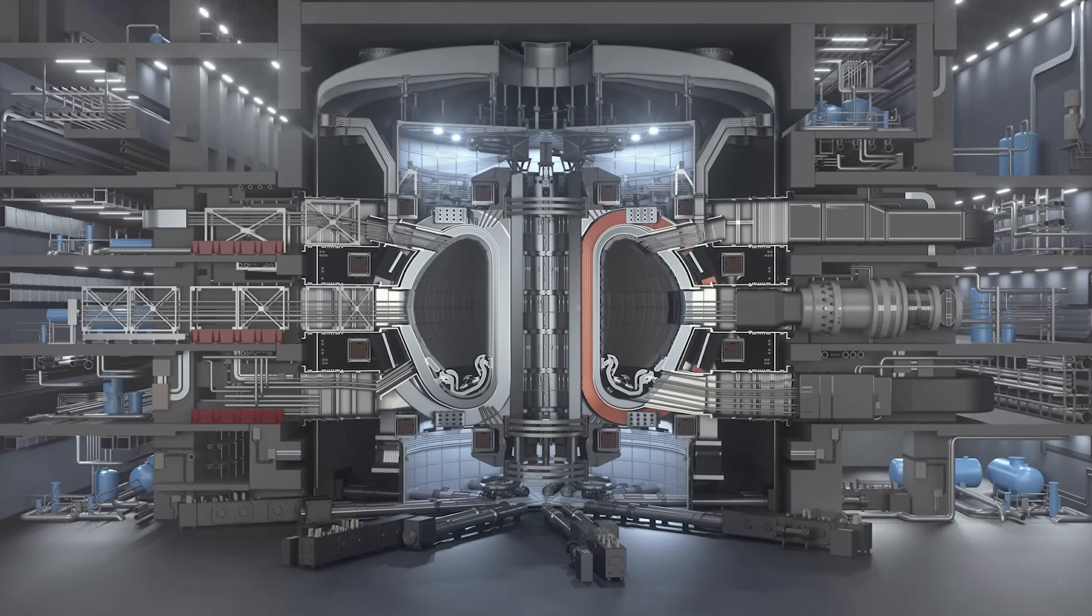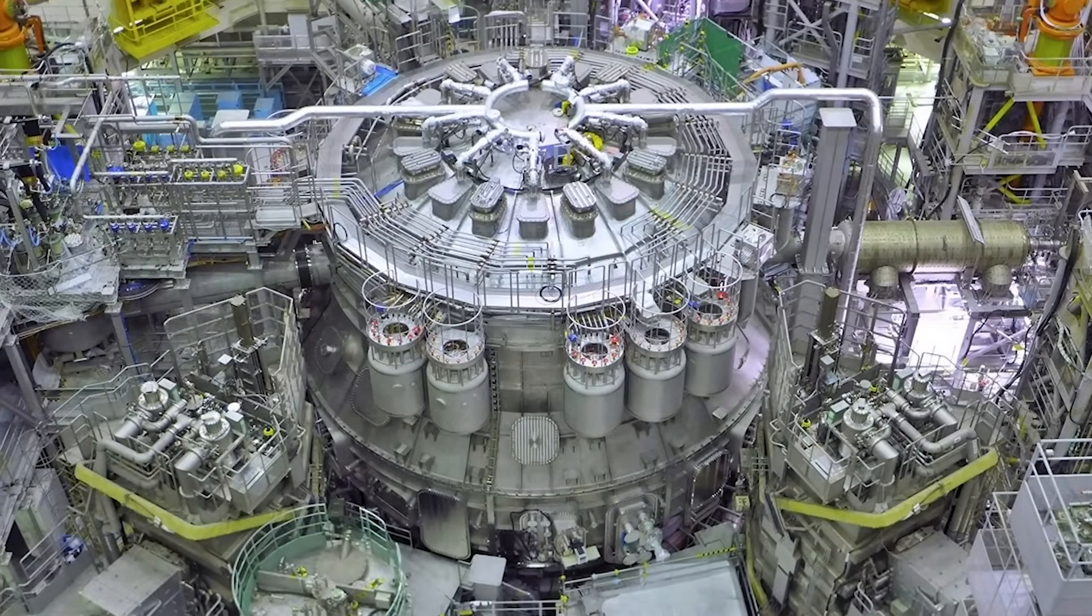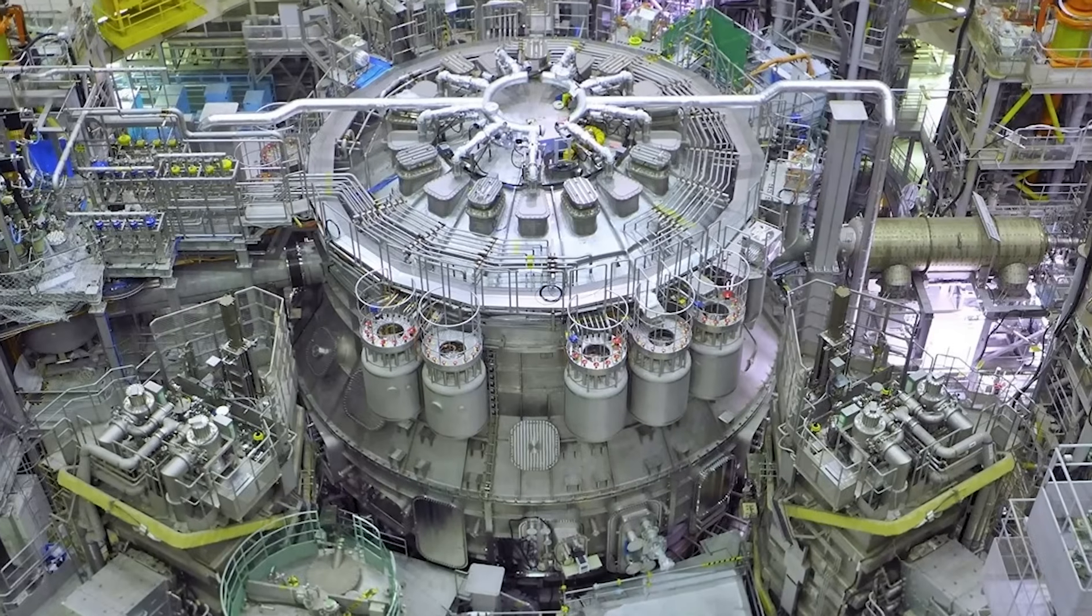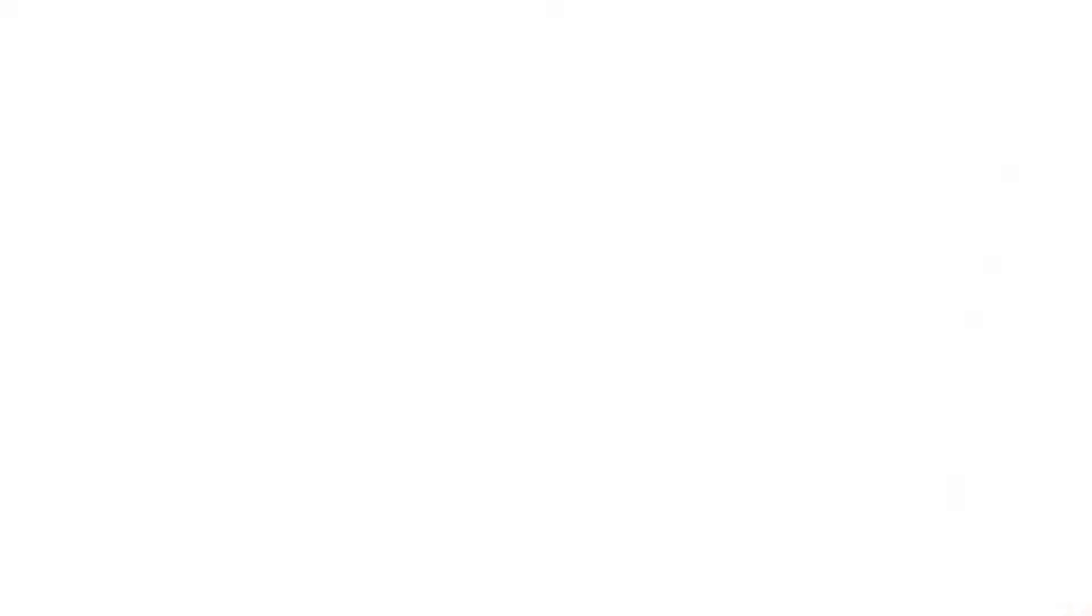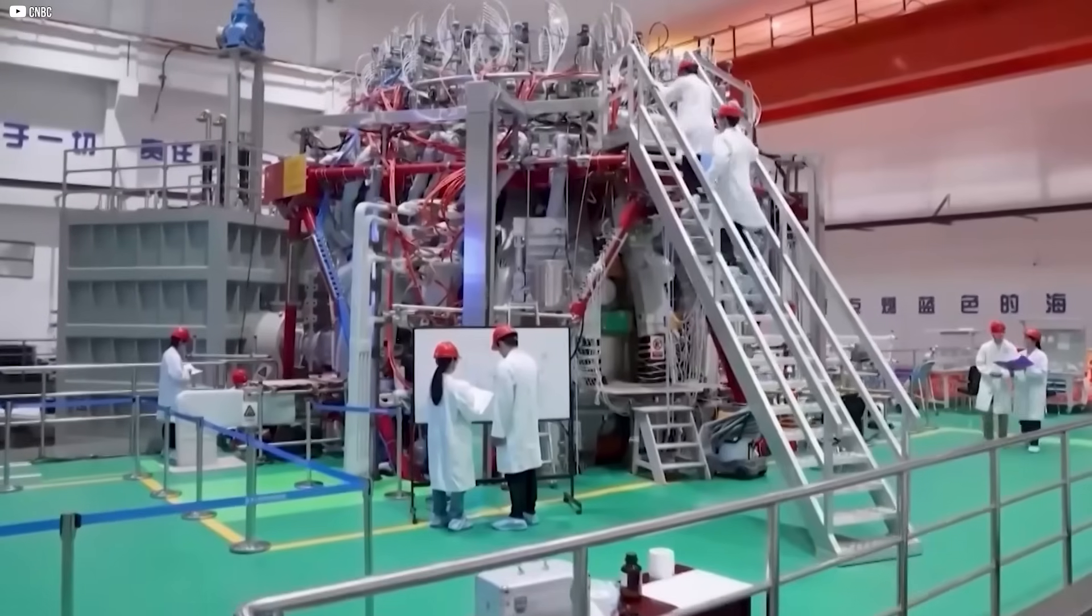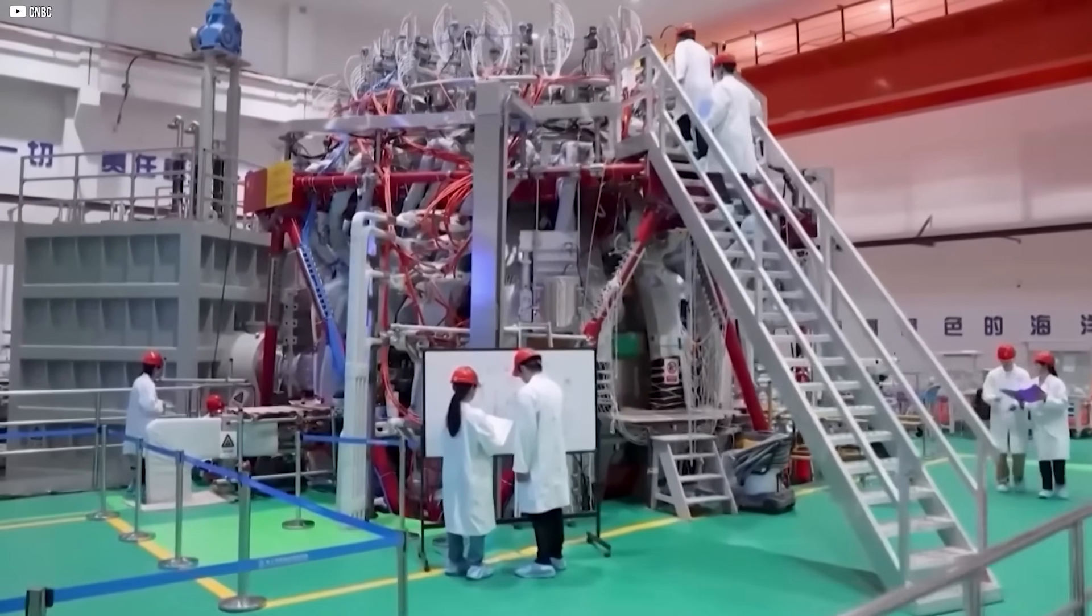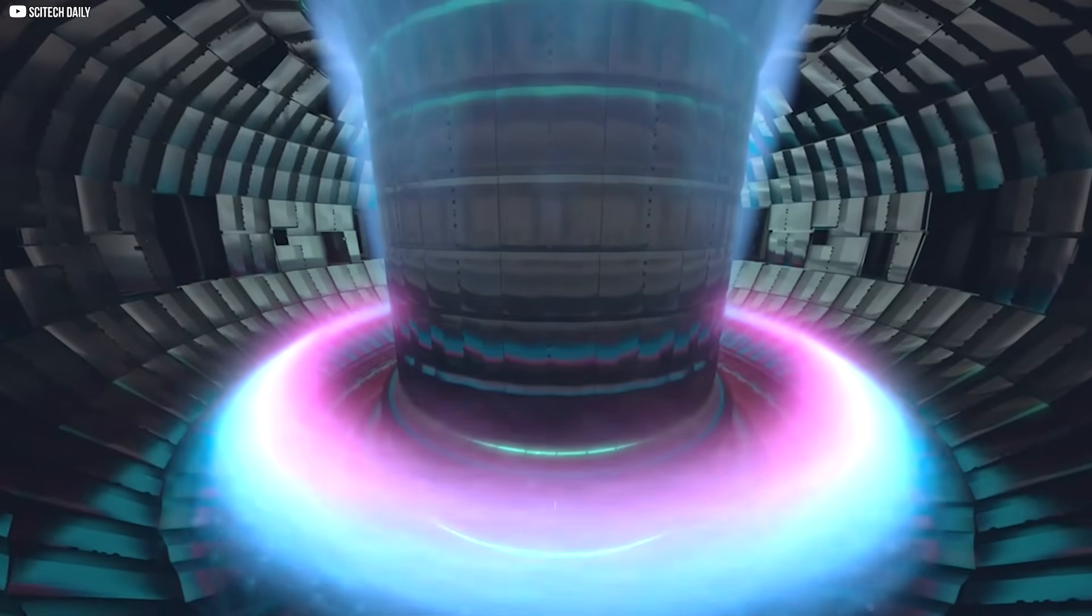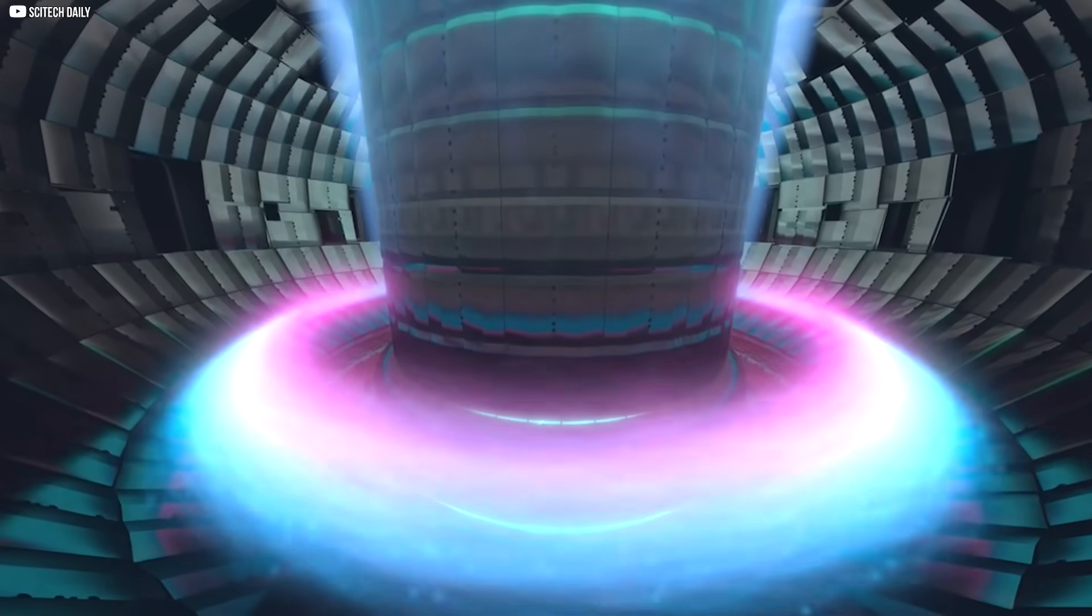This discovery's biggest test case is ITER. Built through an international collaboration, it's the largest tokamak ever created. Its mission? Prove that fusion can produce more power than it consumes. But it was designed using the Greenwald limit. Every parameter, ion density included, was calculated to stay under that ceiling. But Giacomini's equation now suggests that ITER could safely operate at twice that